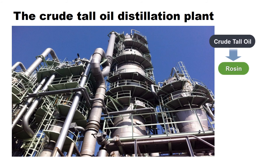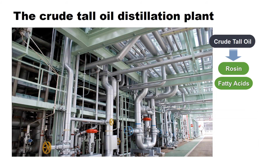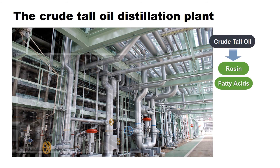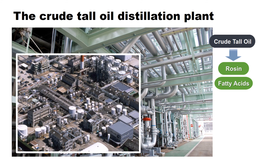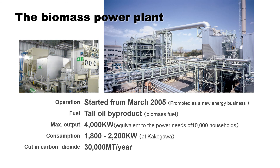We have seen how rosin, fatty acids and distilled tall oil are produced at the crude tall oil distillation plant. The use of special anti-corrosion stainless steel is another feature that sets this plant apart from other oil refineries. Most of the rosin and fatty acids produced at this plant are sent via pipeline to the adjacent Harima Chemicals plant to be converted into other chemicals. By-products such as pitch and low boiling point head recovered at the crude tall oil distillation plant are effectively used as fuel at the neighbouring biomass power plant, which satisfies all of Harima's Kakogawa plant and Harima M.I.D. Incorporated steam and power needs. Any surplus power generated is sold to a local power company.